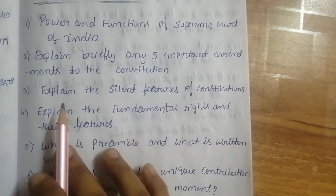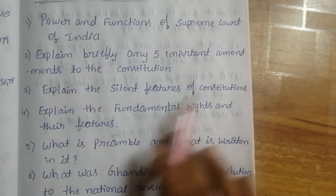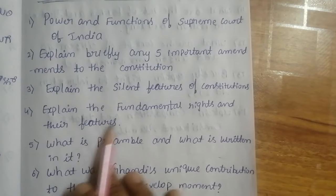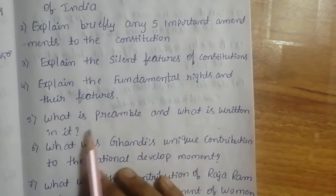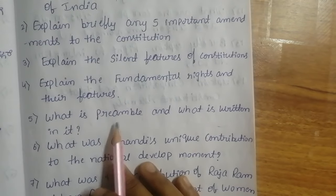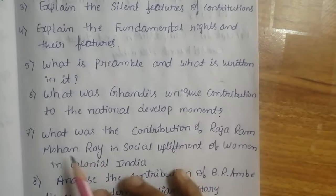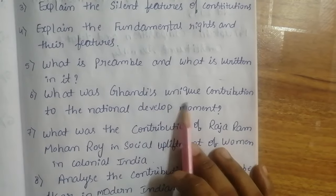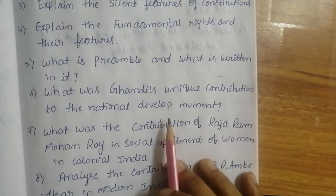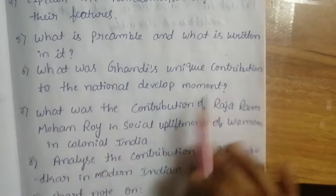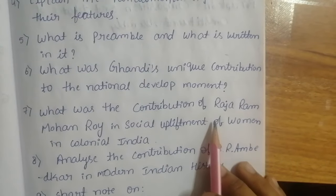Explain briefly any five important amendments to the Constitution. Explain the salient features of the Constitution. Explain the fundamental rights and their features. What is the preamble and what is written in it? What was Gandhiji's unique contribution to the national development movement?